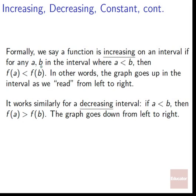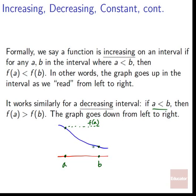For decreasing, we have some interval with a decreasing graph. If we pick two points a and b where a is on the left (a < b), then f(a) is greater than f(b) — the graph is going down from left to right. For constant, if we choose any a and b, they wind up at the exact same height: f(a) equals f(b). The graph's height does not change in that interval.